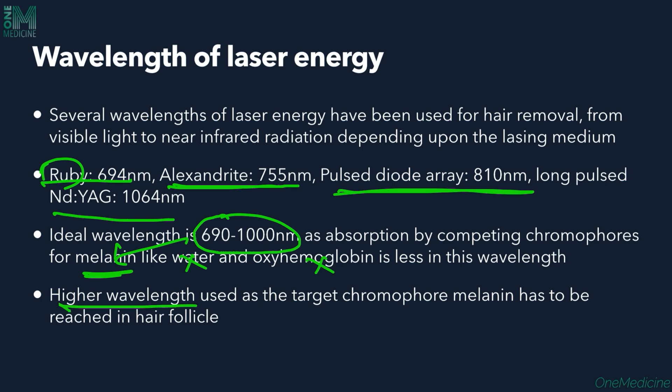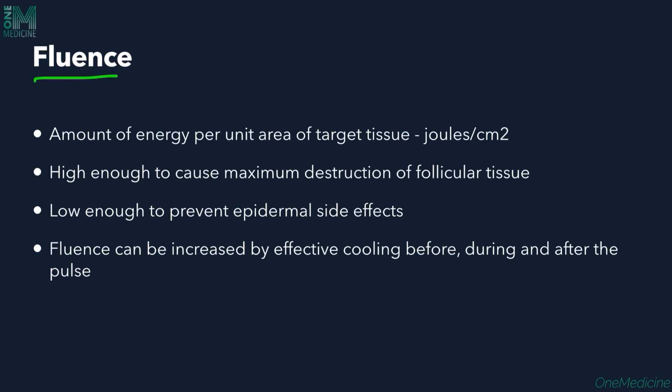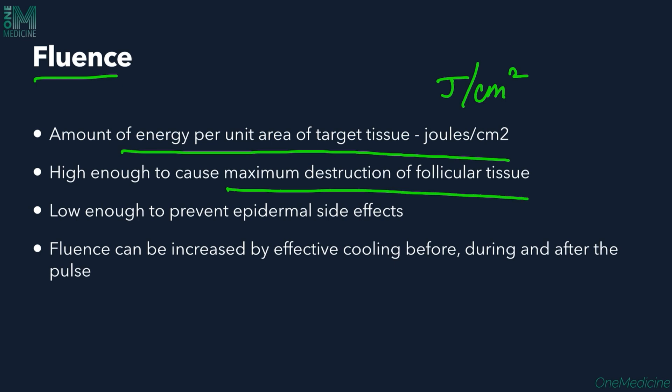Higher wavelength breaches the hair follicle and destroys it effectively. Fluence is the amount of energy per unit area of the target tissue, expressed as joules per centimetre squared. It has to be high enough to cause maximum destruction of the hair follicle but low enough to decrease any epidermal side effects. Fluence can be increased by effective cooling before, during, and after the pulse is given — the pulse being the short burst of laser energy applied.